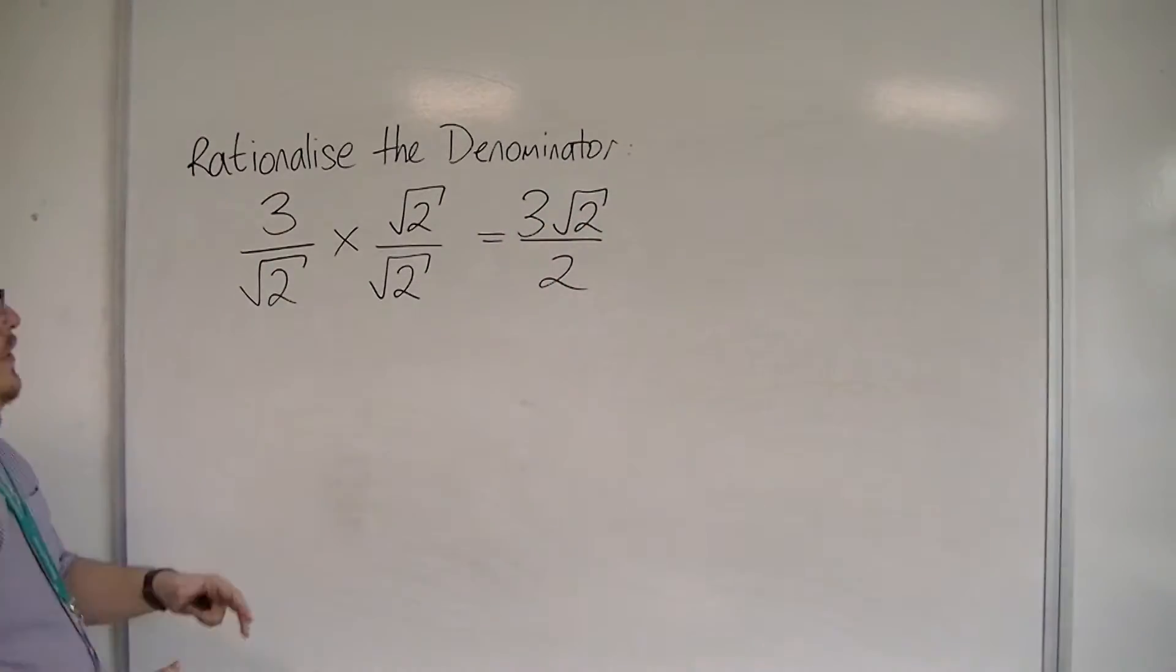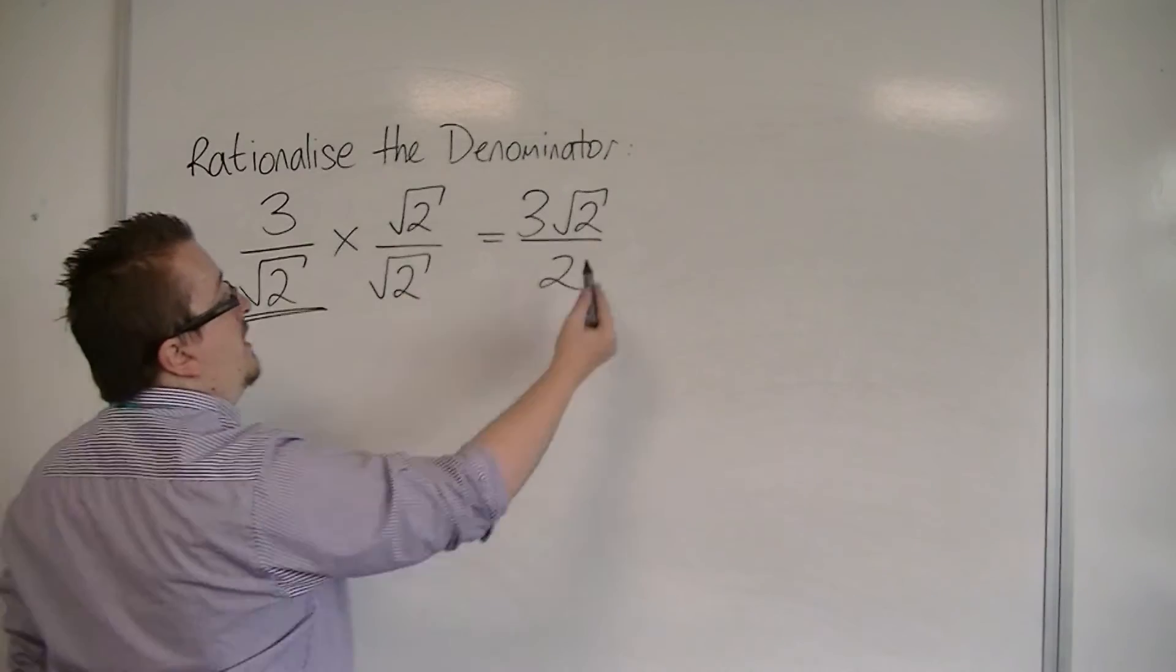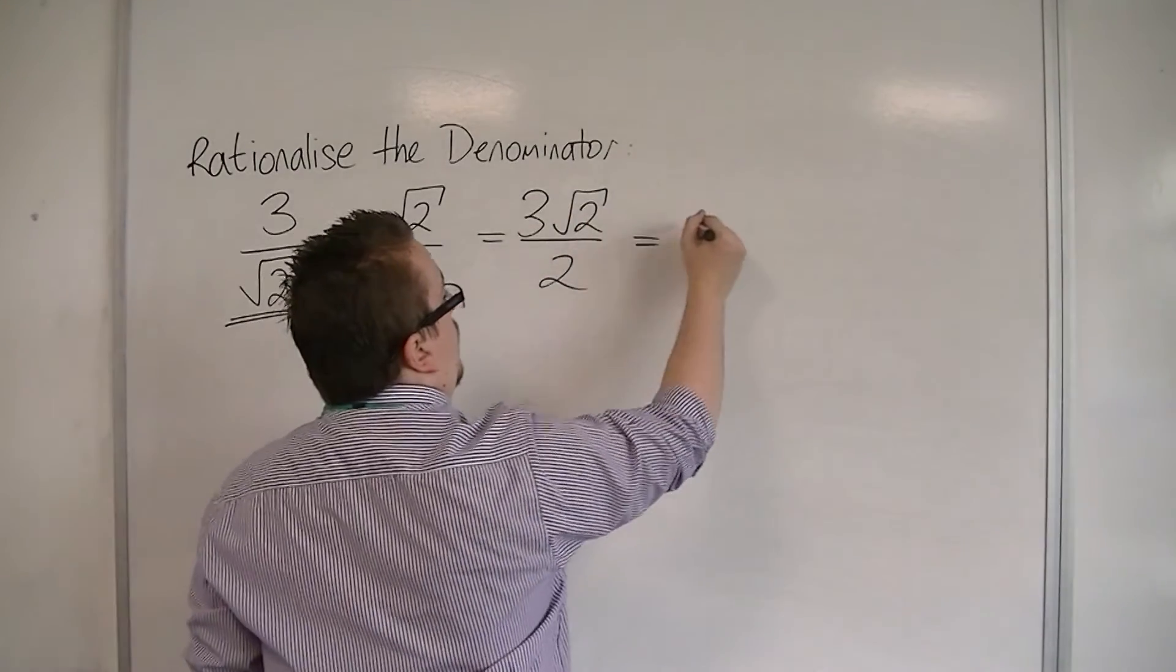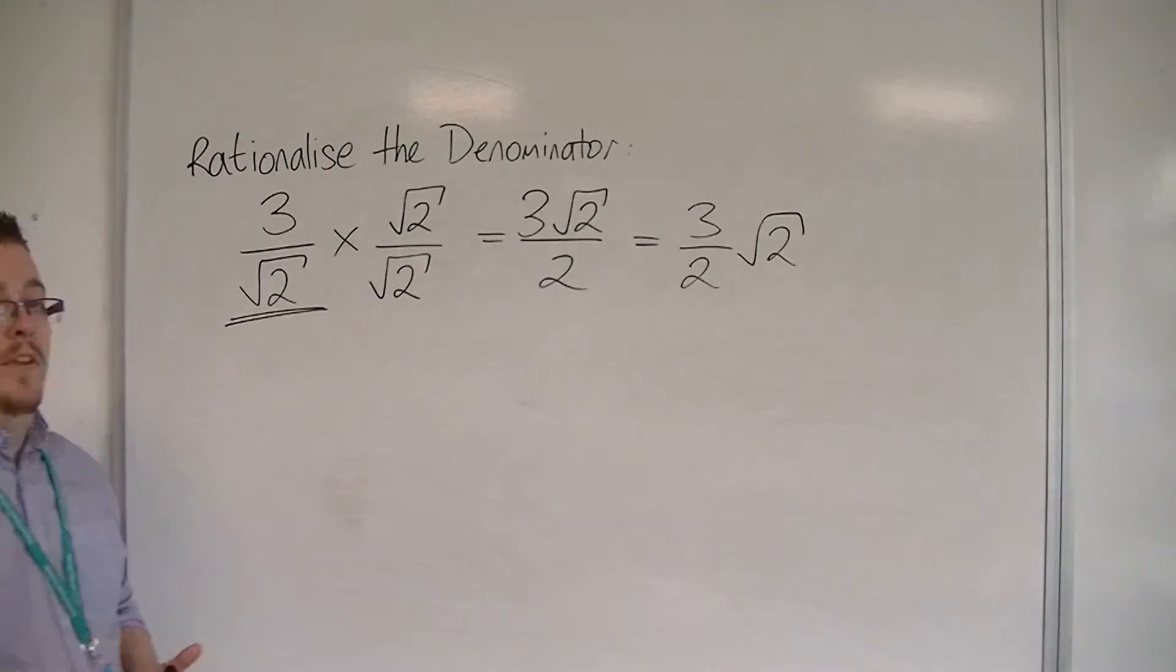So what's happened is that the 3 over root 2, when I multiply it by 1, has become 3 root 2 over 2, or 3 halves times root 2. Both the same thing.